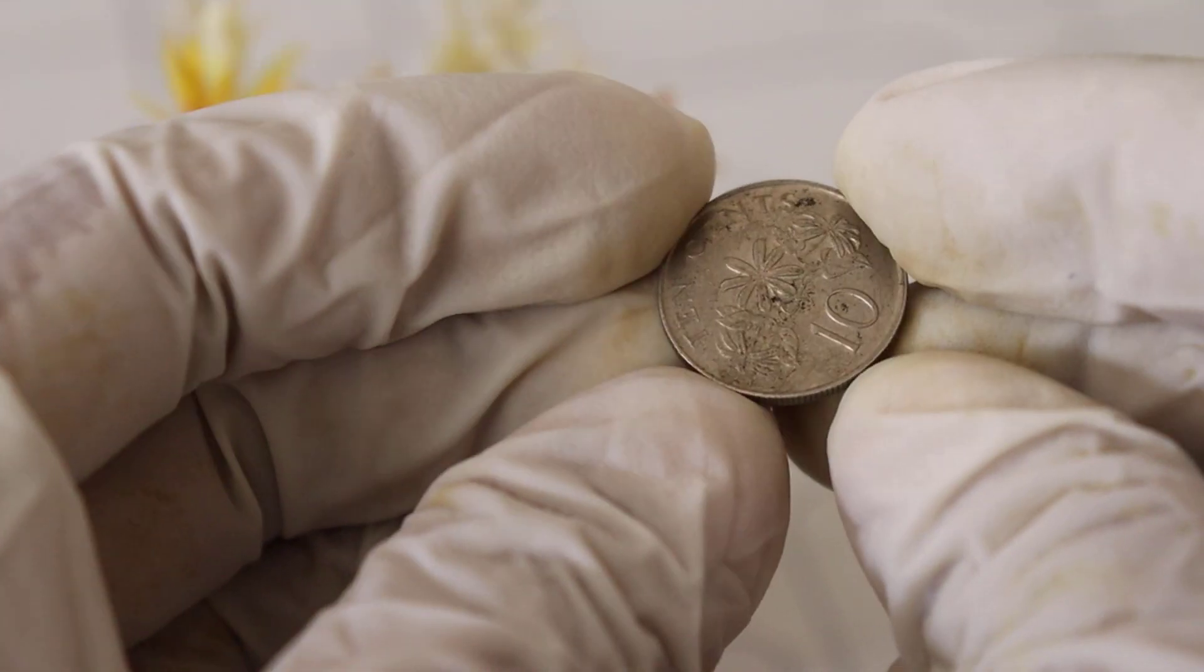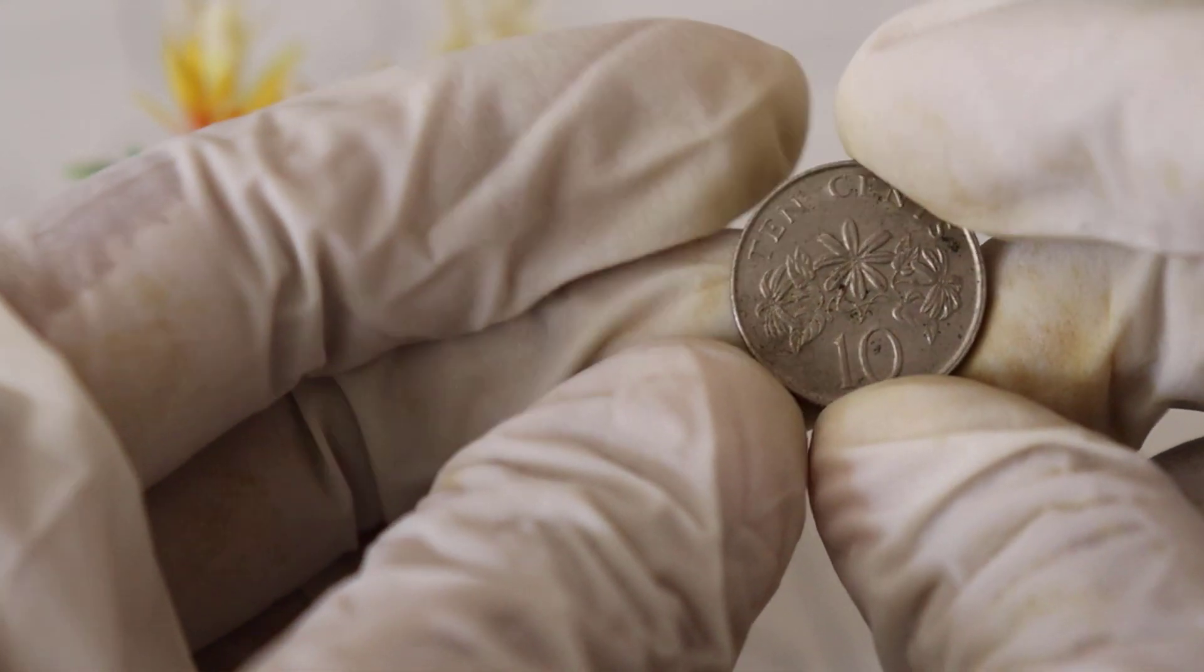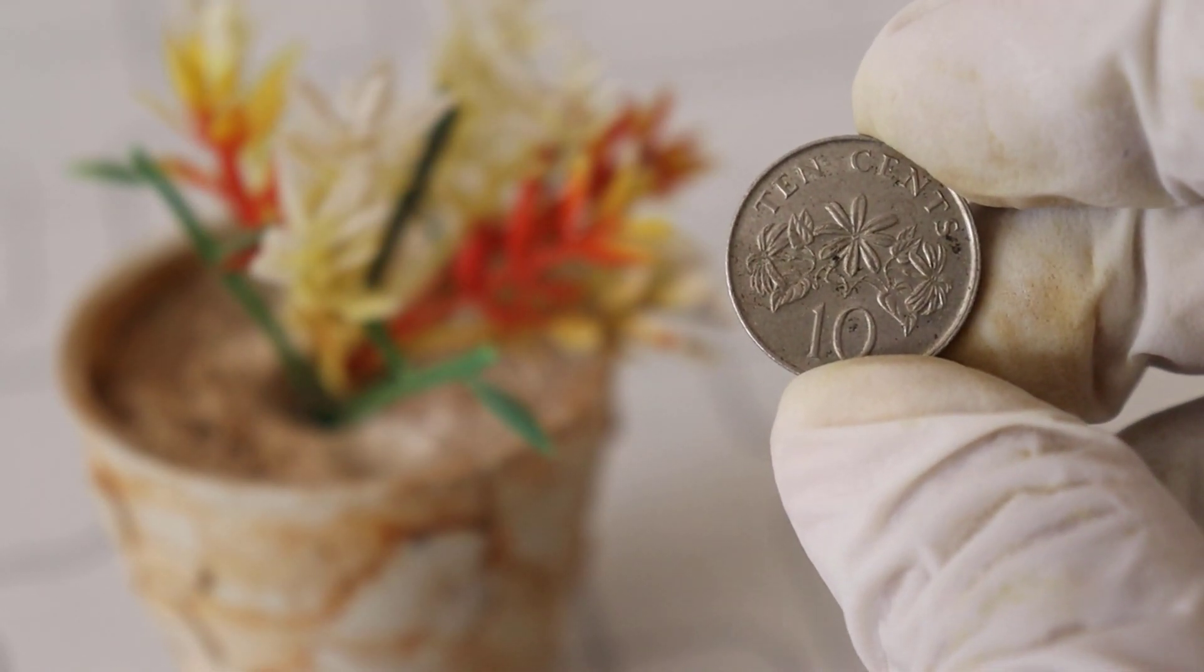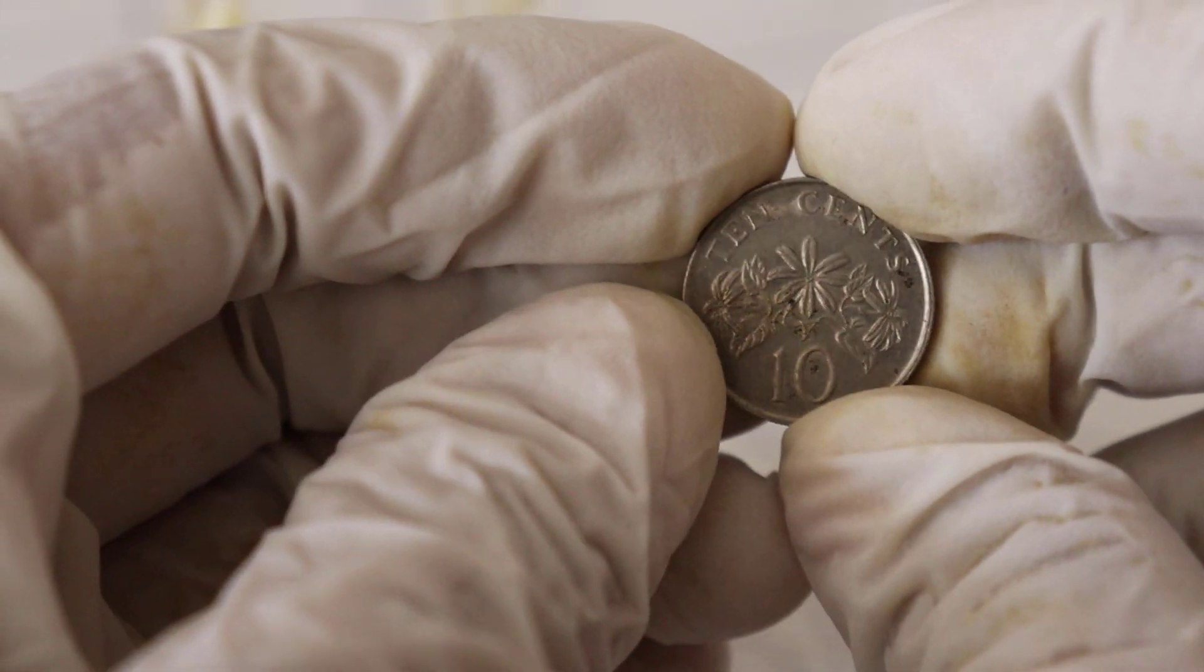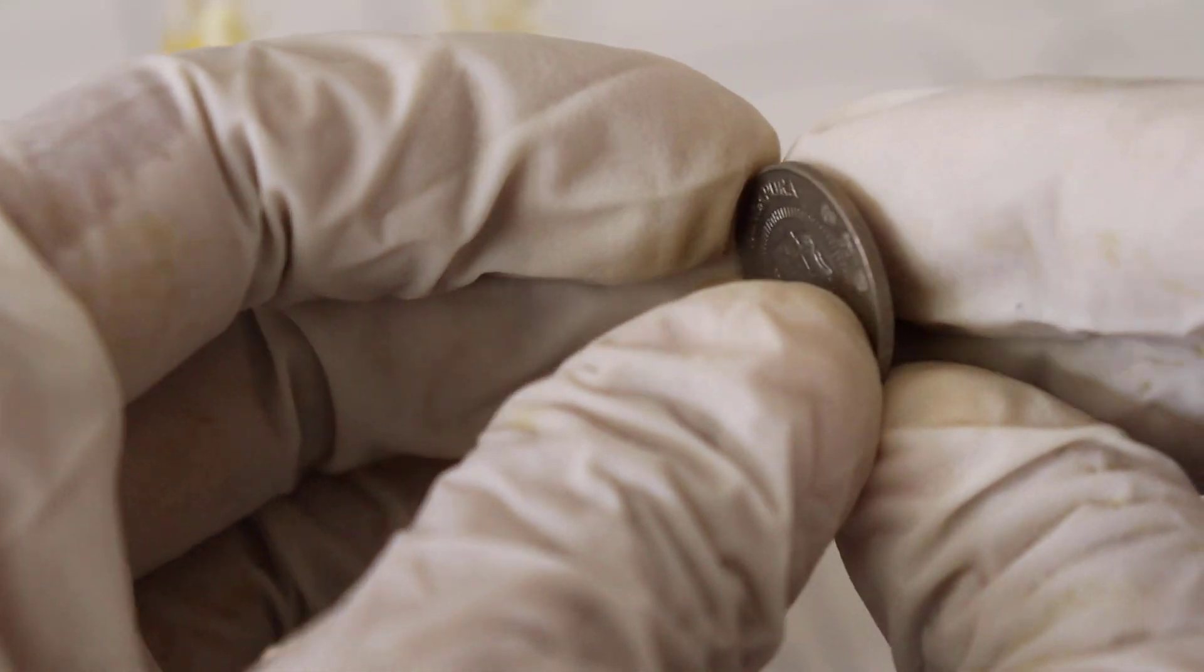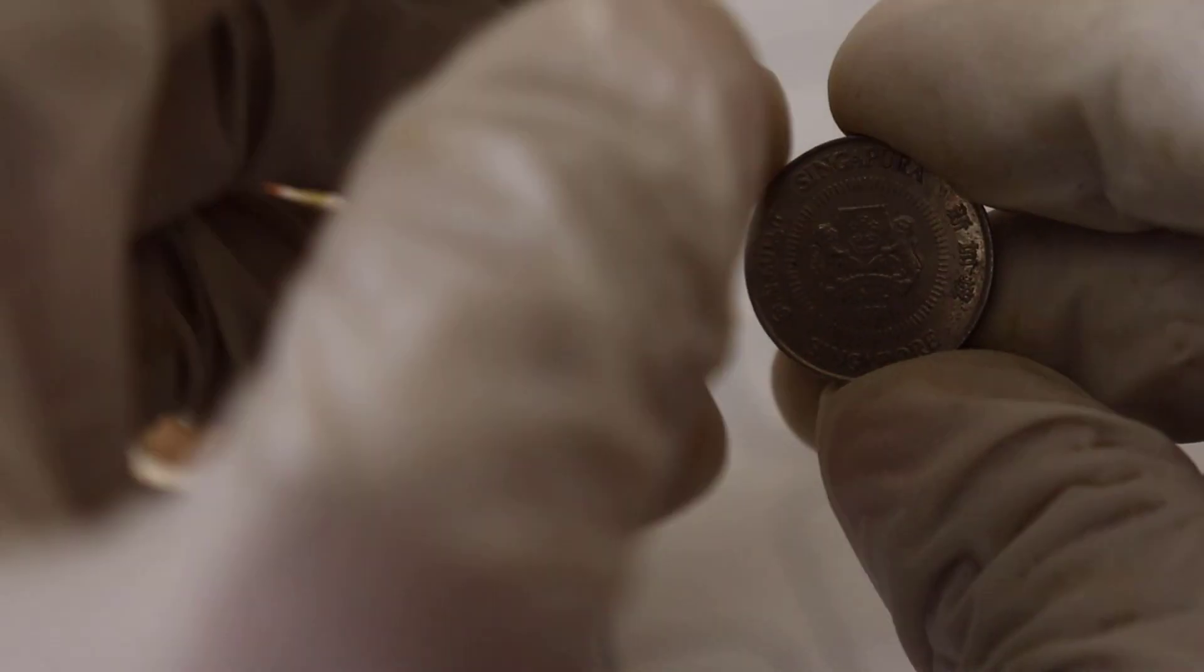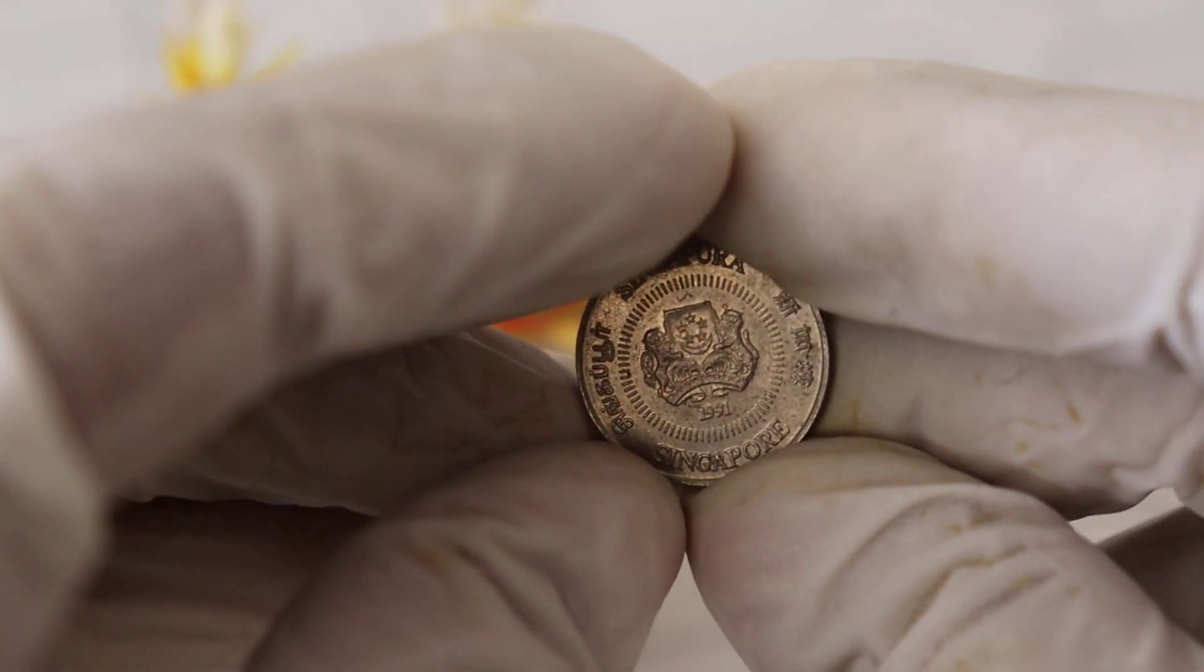The 1991 Singapore Ten-cent coin holds a special place in the hearts of collectors and history enthusiasts. It was minted by the Singapore Mint and is part of Singapore's long and colorful numismatic history. This coin is made of copper-nickel, has a diameter of 18.5 millimeters, and features the iconic Singaporean lion on its obverse side.